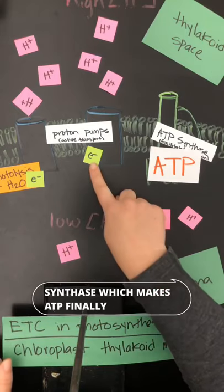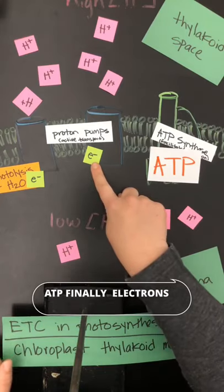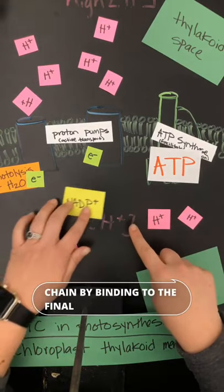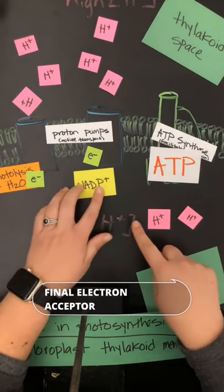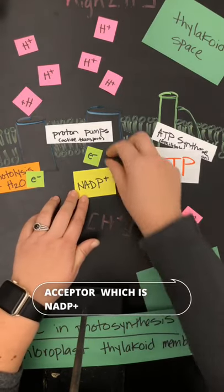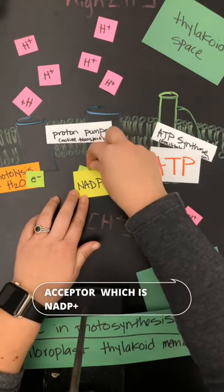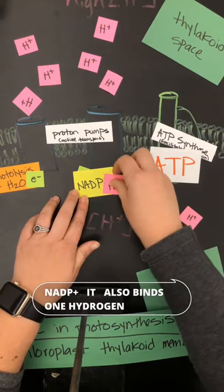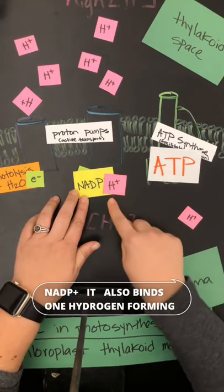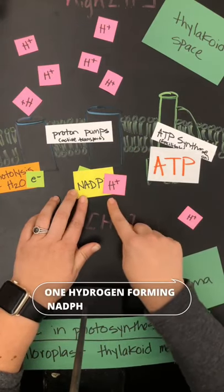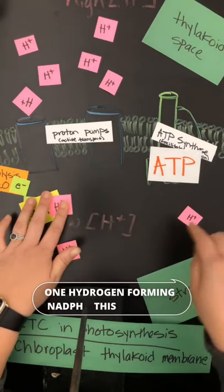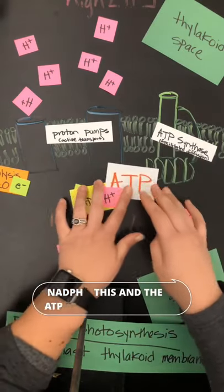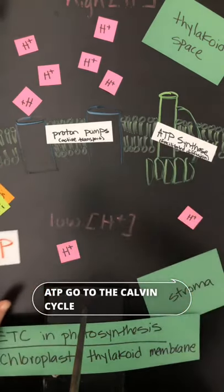Finally, the electrons leave the transport chain by binding to the final electron acceptor, which is NADP+. NADP+ also binds one hydrogen, forming NADPH. And this NADPH and the ATP go to the Calvin cycle.